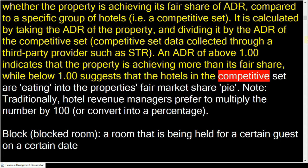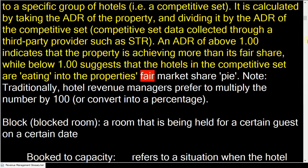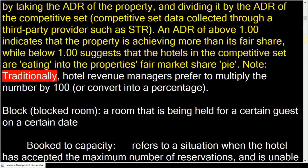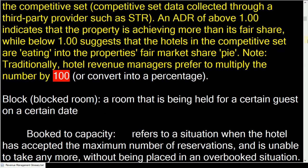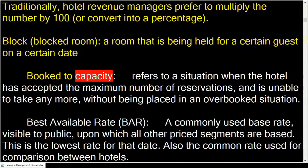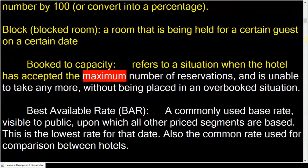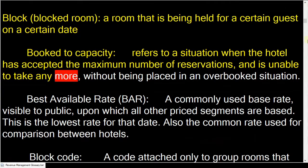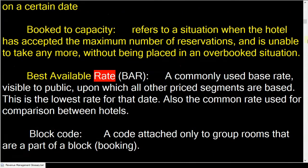An ARI above 1.00 indicates the property is achieving more than its fair share, while below 1.00 suggests hotels in the competitive set are eating into the property's fair market share. Hotel revenue managers traditionally prefer to multiply the number by 100. Block is a room held for a certain guest on a certain date. Booked to capacity refers to when the hotel has accepted the maximum number of reservations and cannot take more without being overbooked.